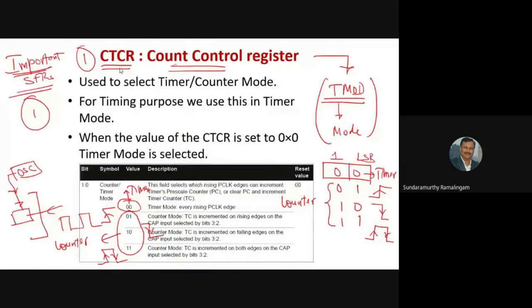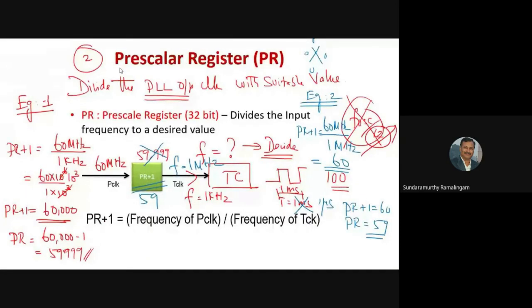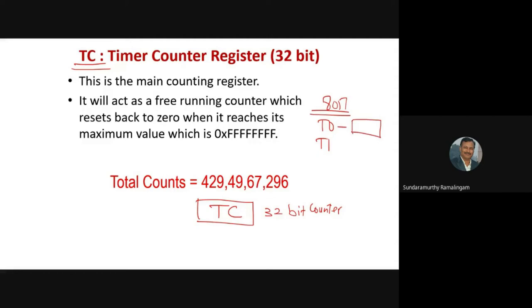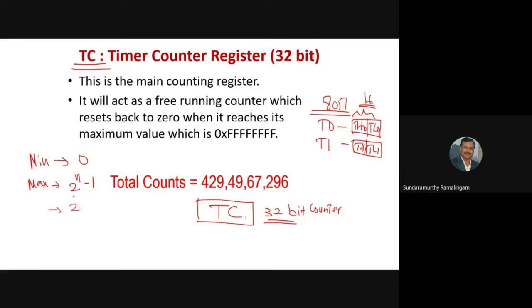So we have seen three registers: Count Control Register (CTCR), Pre-scalar Register, and Timer Control Register (TCR). Finally, the actual timer itself — TC stands for Timer Counter — is a 32-bit counter in LPC2148, compared to the two 8-bit components (TL0/TH0 or TL1/TH1) in 8051, making it a 16-bit counter there.